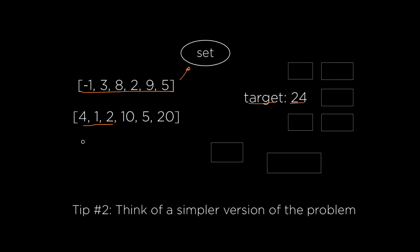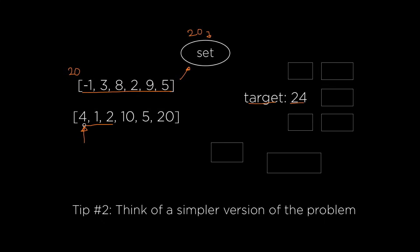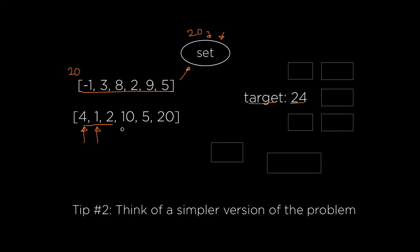After populating the set, go through the elements in the second array and check if any pair adds up to the target — exactly 24 in this case. For example, when looking at the number 4, just ask: is there a number 20 in the first array? That's easy to check by looking in the set. If it's there, return 20 and 4. If not, move to the next element, say 1, and repeat: is there a 23 in the set? This solution runs in O(n) time because we only need to go through each array once.